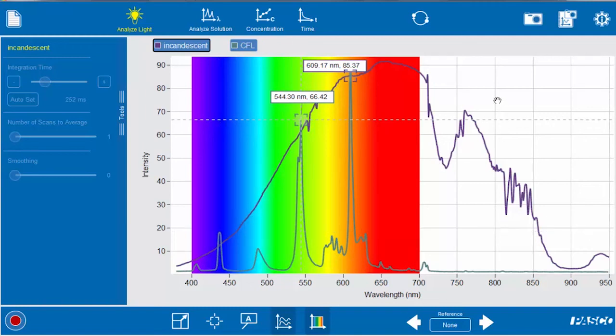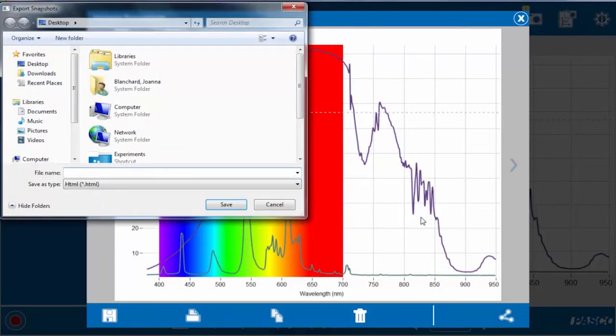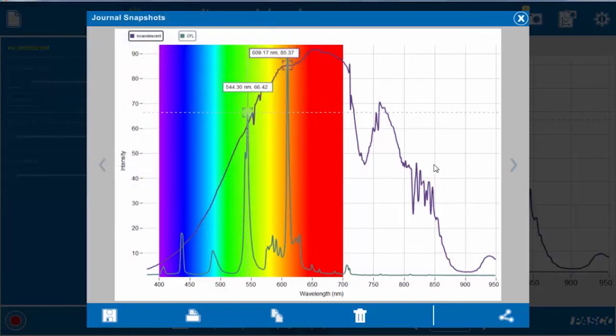So finally if we want to save this data, you can press the camera button up here to take a snapshot and there's a snapshot of the spectrum that we took from the incandescent and the compact fluorescent light. And this button down here allows you to export your snapshot, so we can export it, we can save it as light and just hit save and then you'll have access to it.